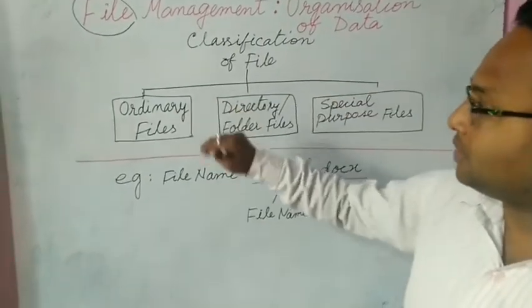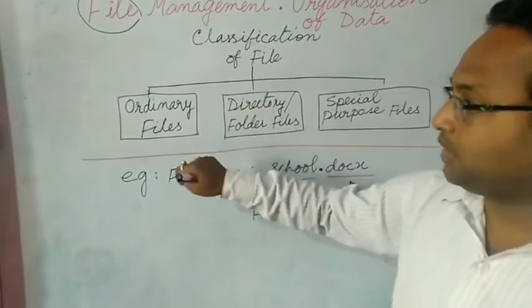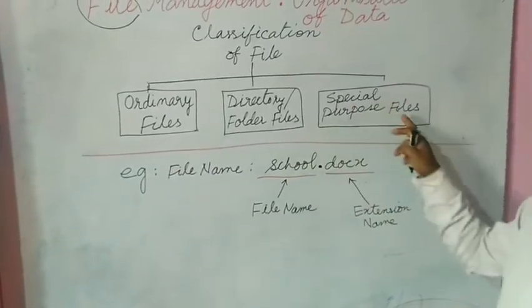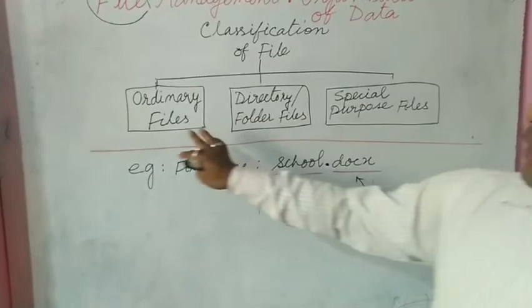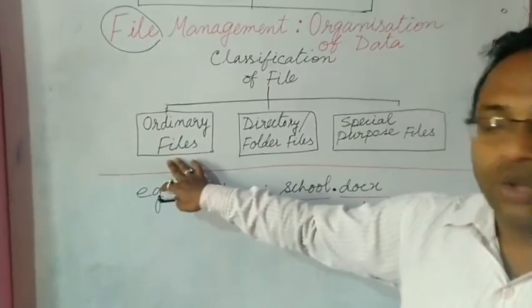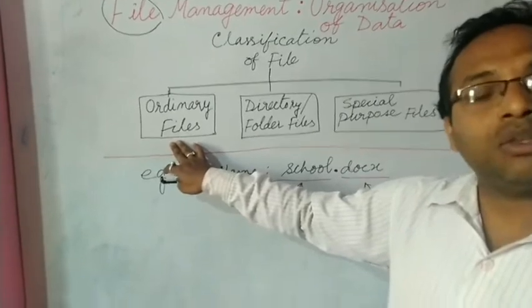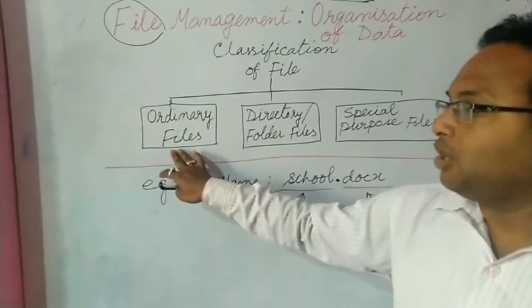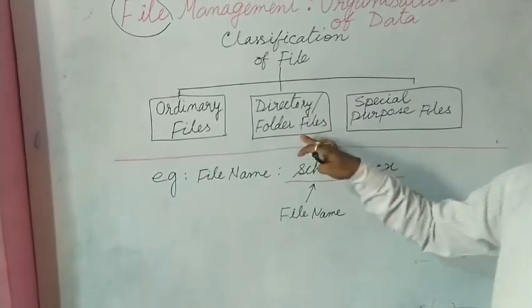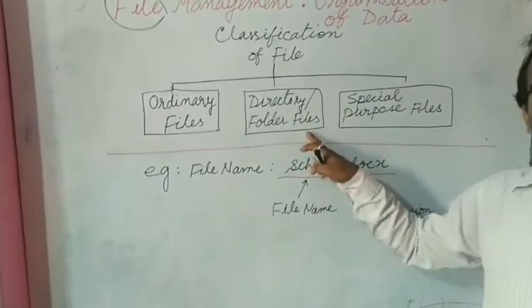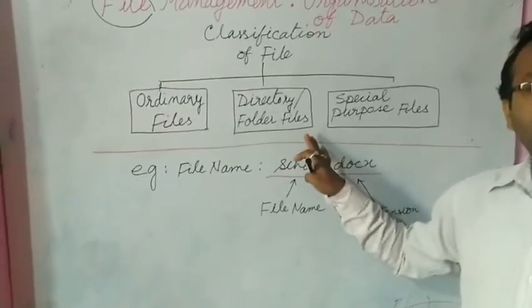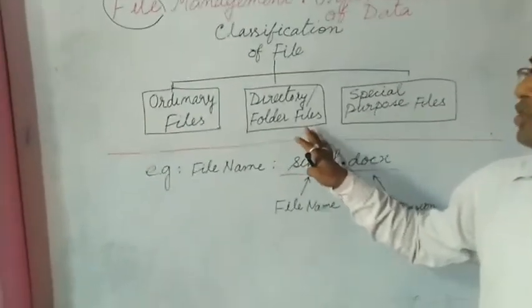Now the files are classified broadly into three types: ordinary files, directory or folder files, and special purpose files. Ordinary files are the files which you normally create with the help of MS Word, MS Excel, PowerPoint, or Paint, which are made for normal use.